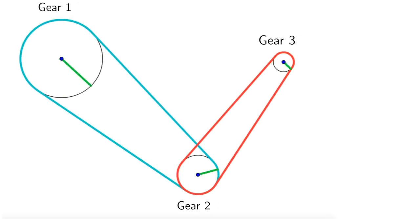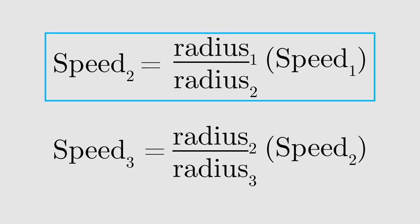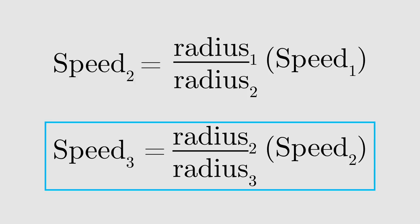Of course, there's nothing special about these gear ratios. In general, we have this formula when gears 1 and 2 are connected, and this formula when gears 2 and 3 are connected.